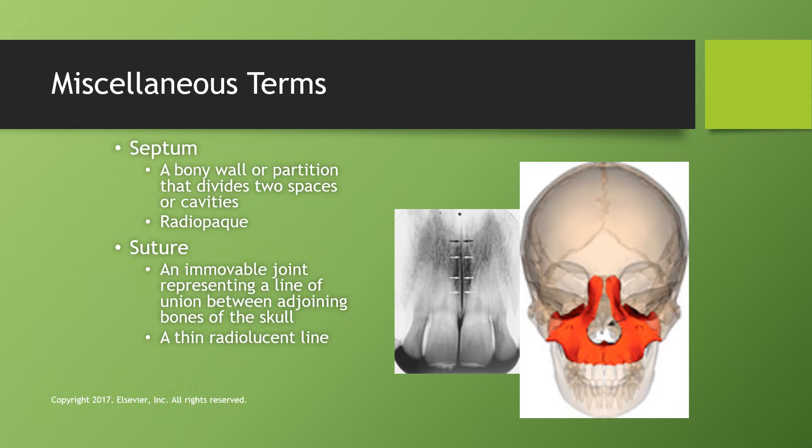Miscellaneous terms: a septum is a bony wall or partition that divides two spaces or cavities — most often we discuss the nasal septum, made up of the nasal bones and the vomer bone, which separates the two cavities of the nasal fossa. A suture is an immovable joint representing a line of union between two adjoining skull bones. The median palatal suture is where the two maxillary bones fused together, appearing as a thin radiolucent line when caught at the right angle.